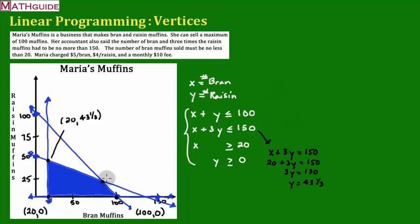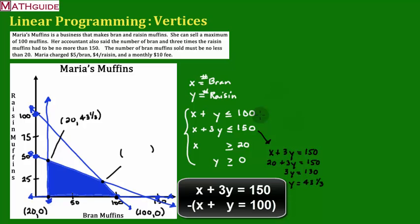Now let's find our last point. Probably the hardest point to find because there's nothing obvious that we know about this point. So we basically have to take these two equations and solve a system of equations. What I'm going to do is take the second equation and subtract the first equation. I'm going to take x minus x, 3y minus y, and 150 minus 100.